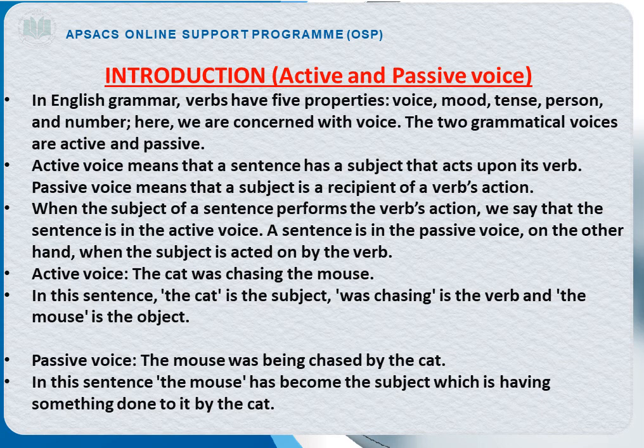In simple words, in active voice the subject acts upon the verb, and when your subject becomes an object, you have to change from active to passive voice. For example: 'The cat was chasing the mouse.' In this sentence, 'the cat' is the subject, 'was chasing' is the verb, and 'mouse' is the object.